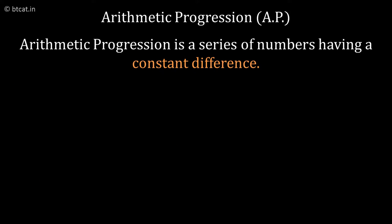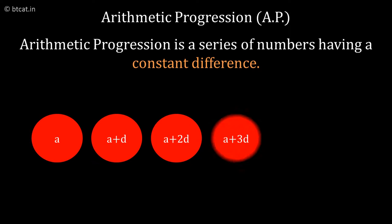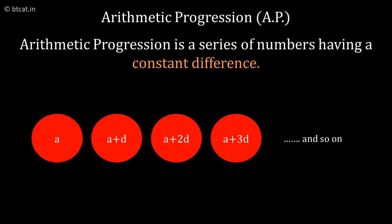So if the first term is A, the next term is A plus D, the next is A plus 2D, then A plus 3D and so on. This is classified as AP or arithmetic progression.